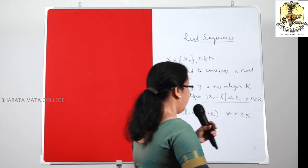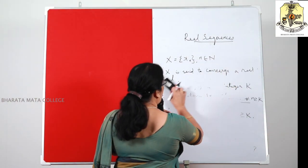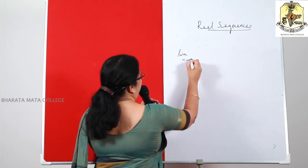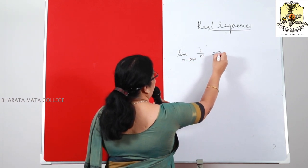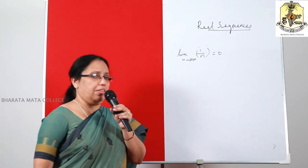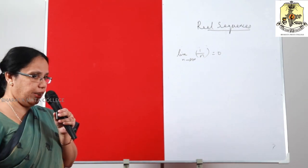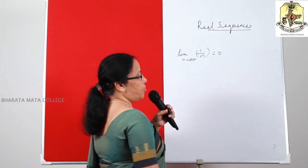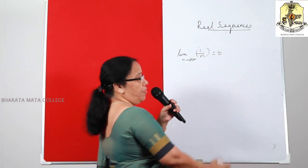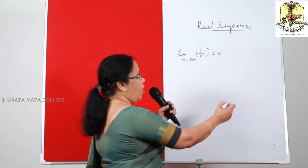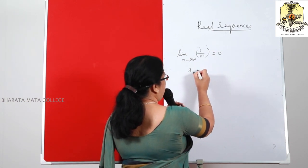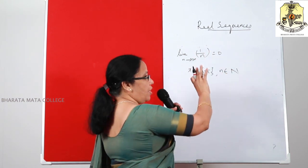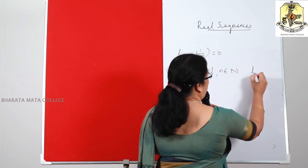Now let us use this definition to prove a standard result. We know that limit as N tends to infinity of 1/N equals 0. We have studied this at the plus-2 level and degree level. But how to prove this result? Let us use the concept of convergence. Here, limit N tends to infinity of 1/N = 0 means we call the sequence X_N = 1/N, N belonging to N, and it converges to the limit L = 0.